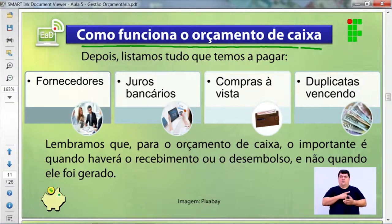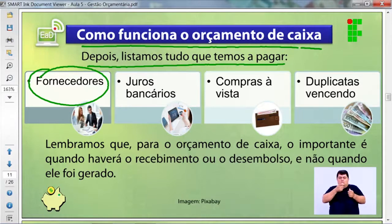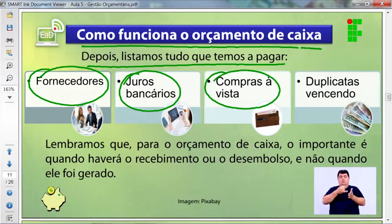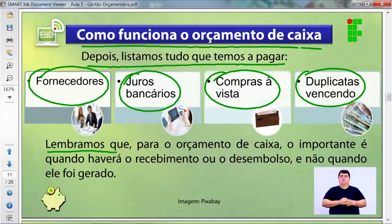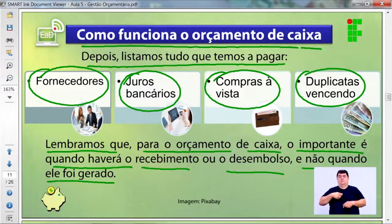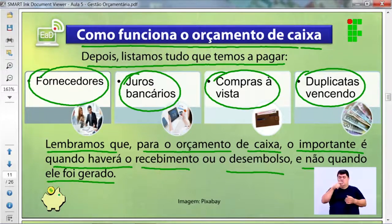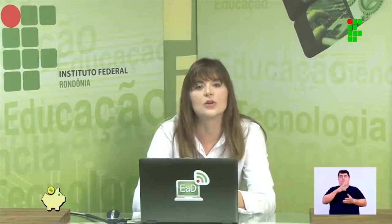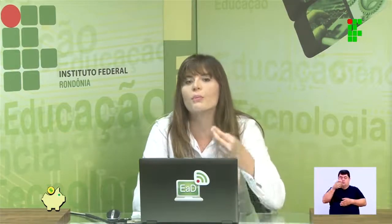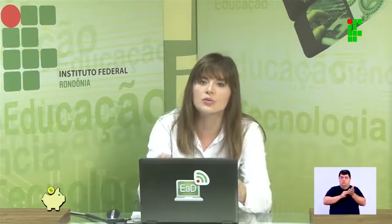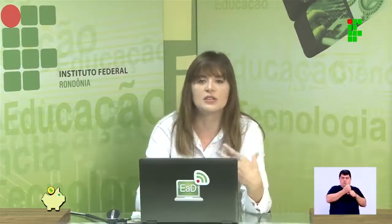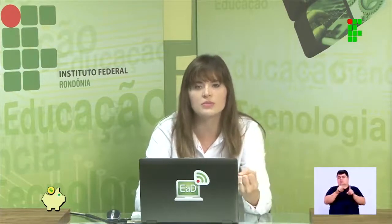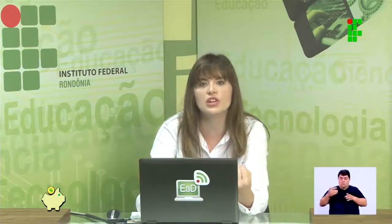Sobre o funcionamento do orçamento de caixa: depois listamos todas as saídas — fornecedores, juros bancários, compras à vista, duplicatas vencendo. Lembrando que no orçamento de caixa o importante é quando haverá o recebimento ou desembolso, e não quando ele foi gerado. Essa é a diferença entre regime de caixa e regime de competência: o regime de competência registra quando foi gerado; o regime de caixa registra quando será o pagamento.